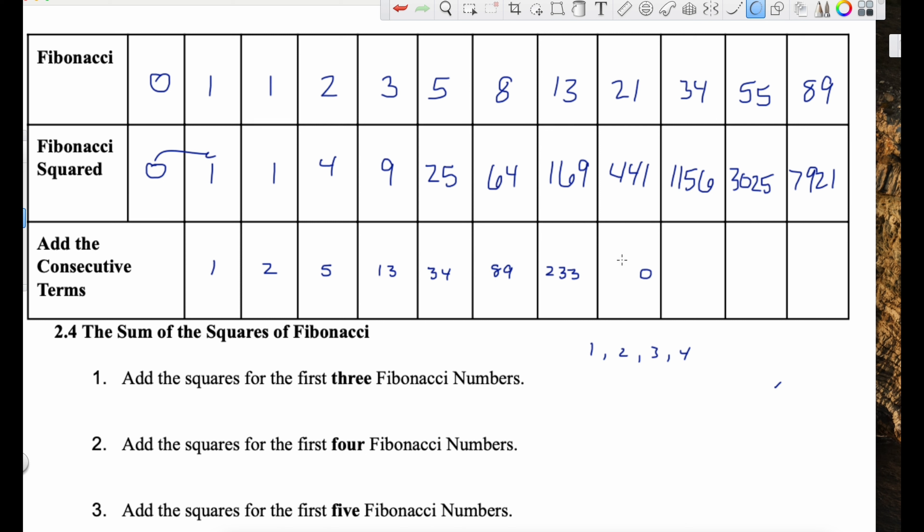The squares of the first three numbers. This row right here. And let's get another color. Eggplant. So we've got zero plus one plus one. Those are the first three, and I get two.